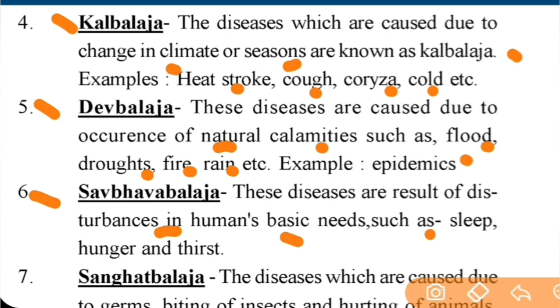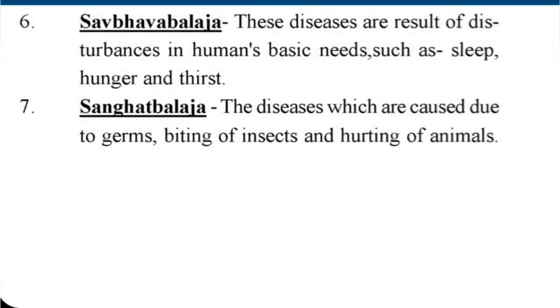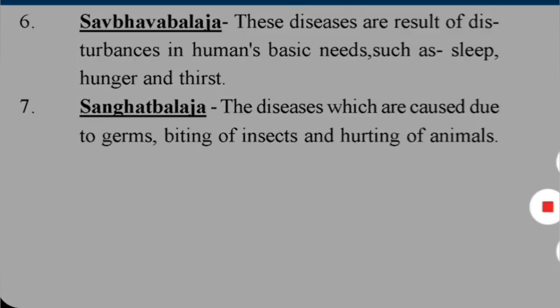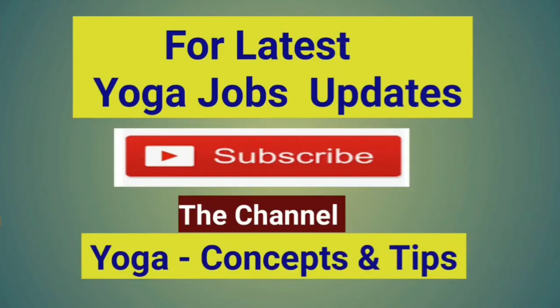Next is Sansargblaj. These diseases are a result of disturbances in a human's basic needs such as sleep, hunger, and thirst. Next is Sanghatblaj. These are diseases caused due to germs, biting of insects, and injuries by animals.